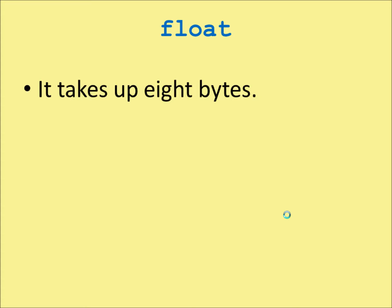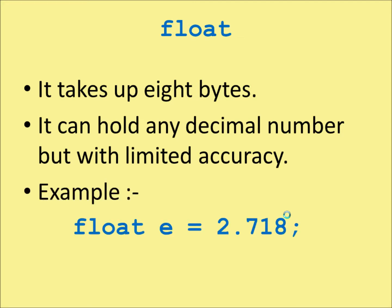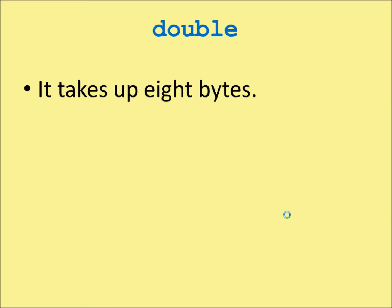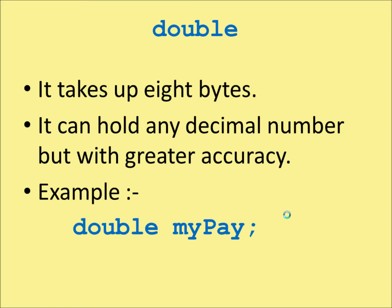Float takes up four bytes but it can hold any decimal number, with a limited amount of accuracy. For example, you might declare: float E = 2.718. Double precision also takes up eight bytes, but it can hold any decimal number with a much greater accuracy. An example would be: double myPay.